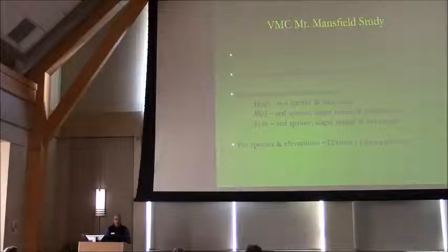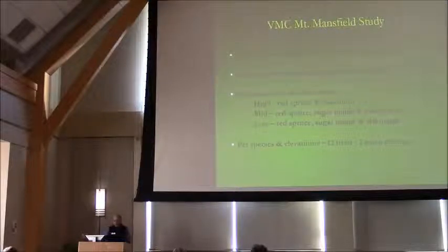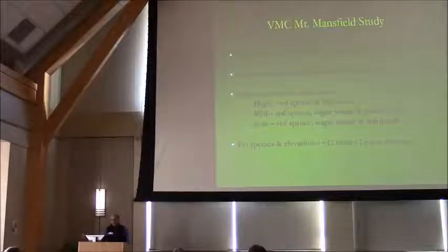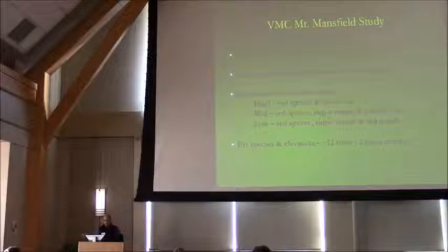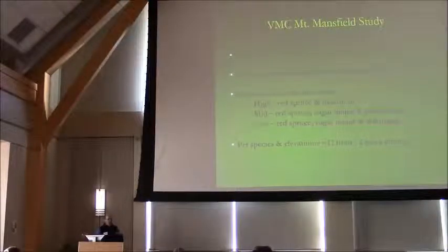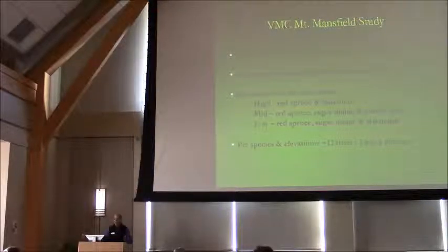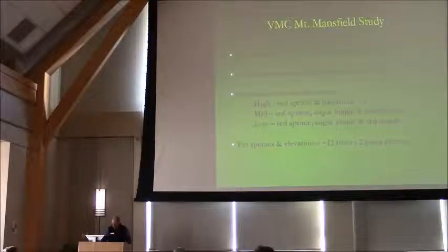They wanted to evaluate growth over the last 50-plus years. They have a lot of other ancillary data for that area but not much on tree growth. So we did three transects on Mount Mansfield across three elevational zones — low, medium, and high — to get different forest types. At high elevation we got red spruce and balsam fir; at mid-elevation, red spruce, sugar maple, and yellow birch; at low elevation, red spruce, sugar maple, and red maple. Importantly, these trees are growing right next to each other, giving us a species-to-species comparison over the same time periods.